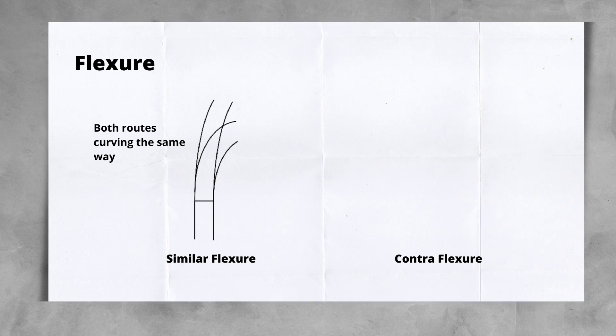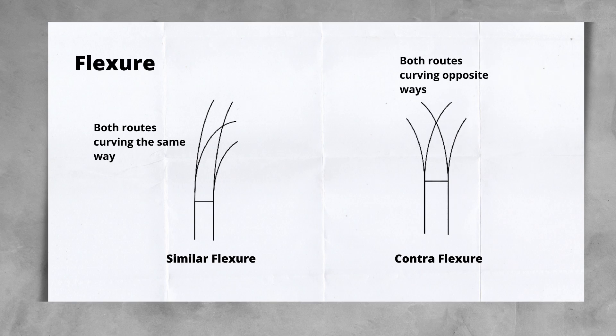In a contra-Fletcher turnout, the through route is curved in the opposite direction to the main route. This increases the turnout radii, but does introduce some issues, such as negative cant on one of the routes, and also increases switch wear rates.